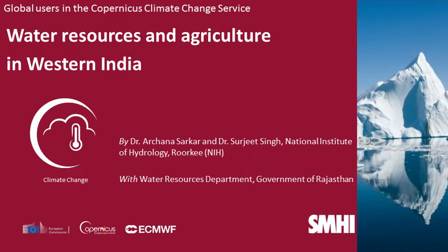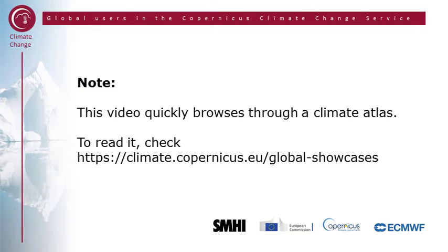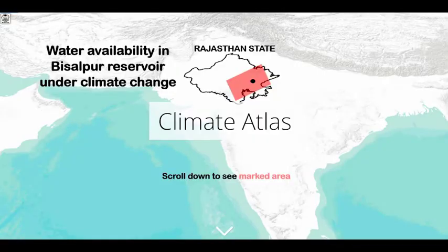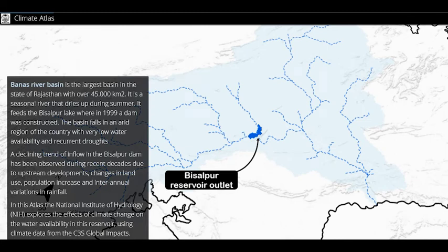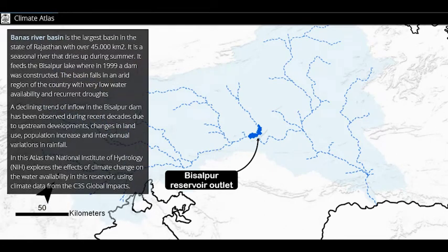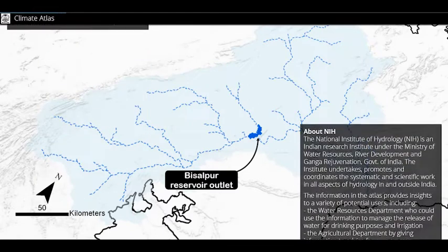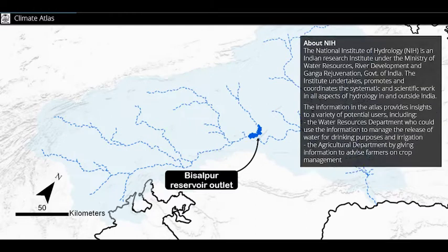The Global Users and Copernicus Climate Change Service made showcases that serve as inspirational examples on using global climate data. This showcase focuses on Water Resources and Agriculture in Western India.